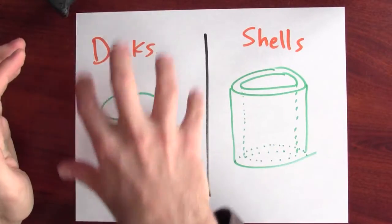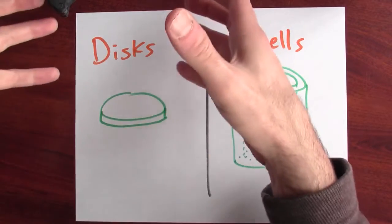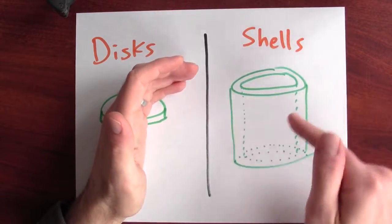Specifically, instead of building an object out of disks, instead of building it by stacking up disks of varying radii, we could build the object by wrapping it with these shells.